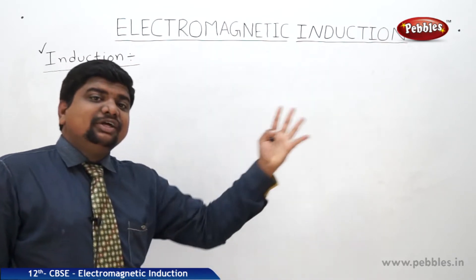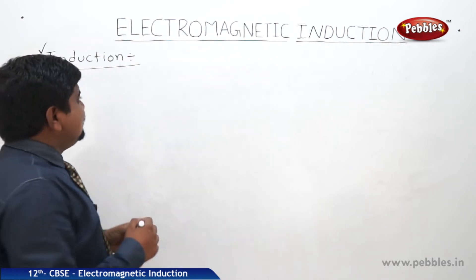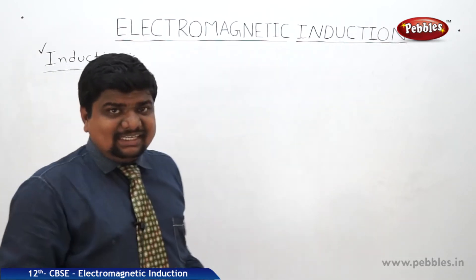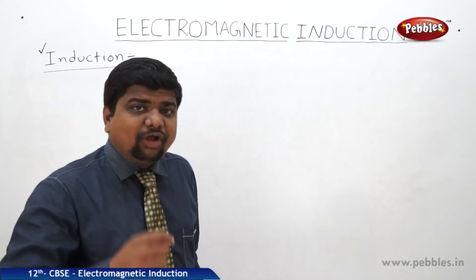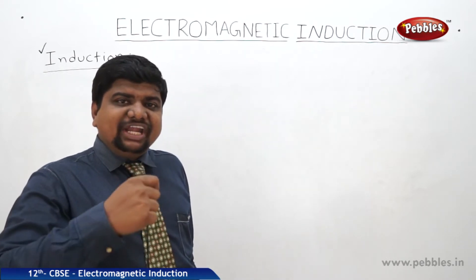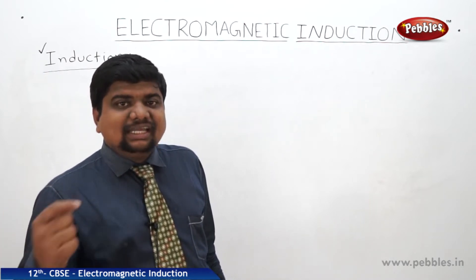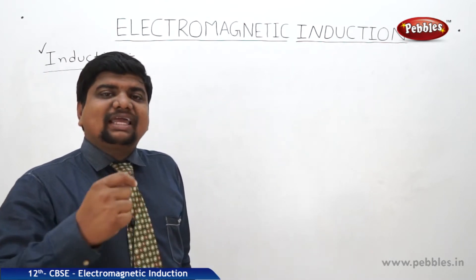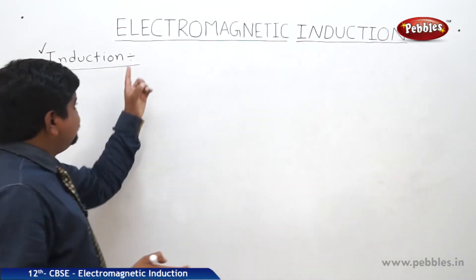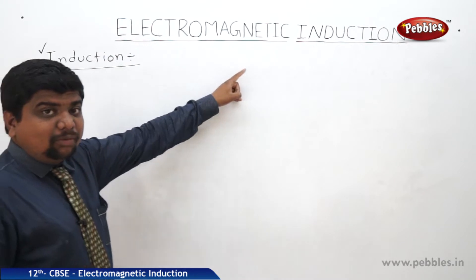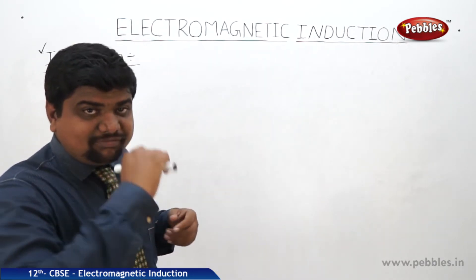Maybe due to self induction or mutual induction. So what is the meaning of induction? Suppose a magnetic flux changes — it produces an induced EMF in the coil. This production of induced EMF due to the change in magnetic flux is called electromagnetic induction. The current which is produced due to this phenomenon is called induced current or induced EMF.